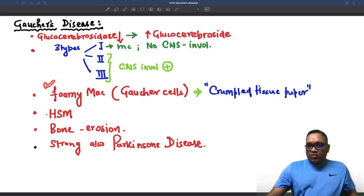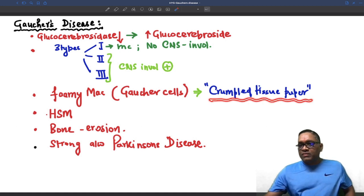On microscopy, you will see foamy macrophages which are also called Gaucher cells. What is characteristic? They have a crumpled tissue paper pattern.